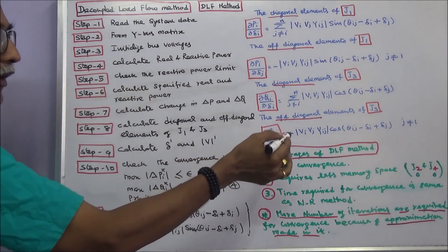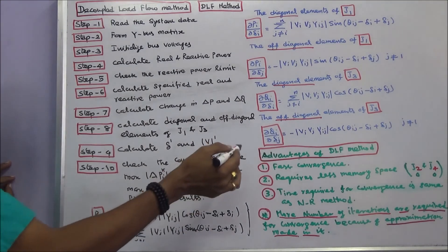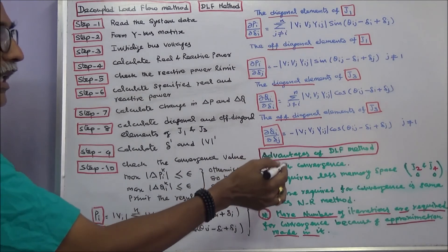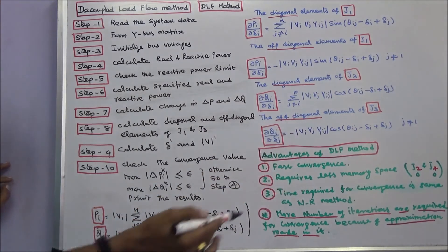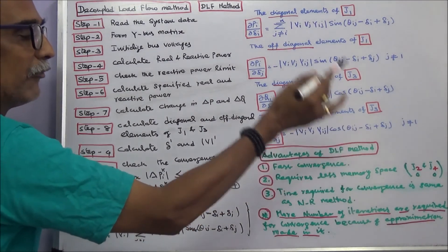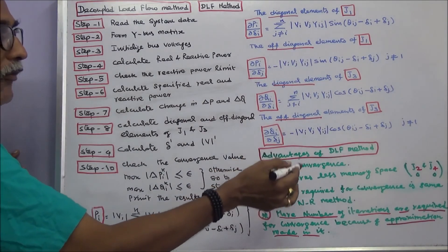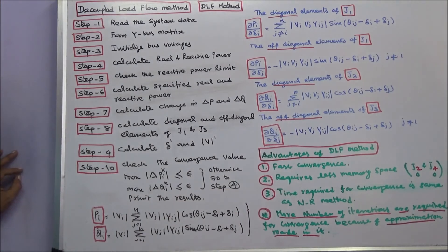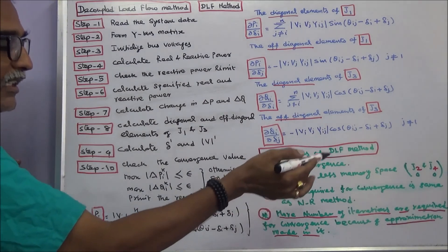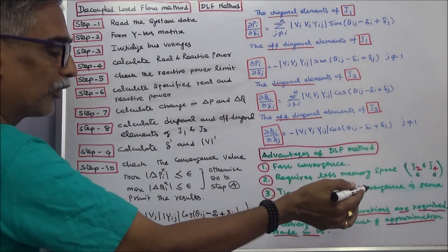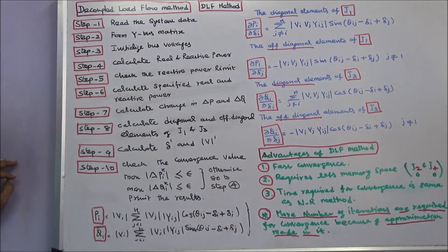Advantages of decoupled load flow method: fast convergence, requires less memory space, J2 elements are 0 and J4 elements are 0, and time required for convergence is same as Newton-Raphson method. Limitation is more number of iterations are required for convergence because of approximation made in it. With this, I conclude my lecture. Thanks for listening.